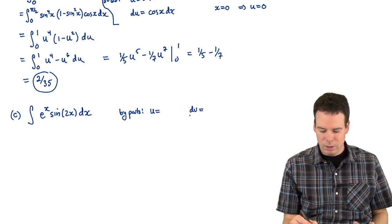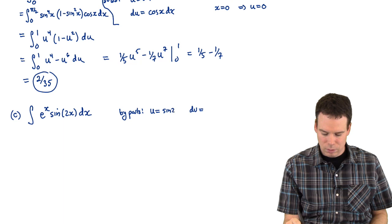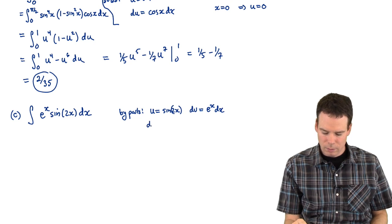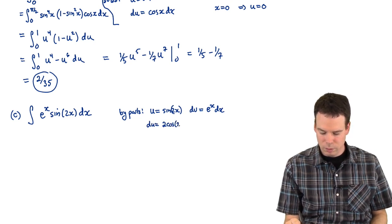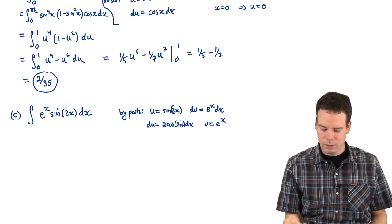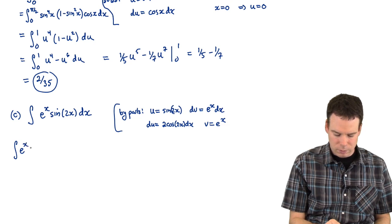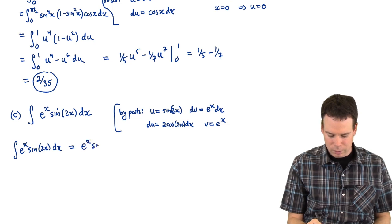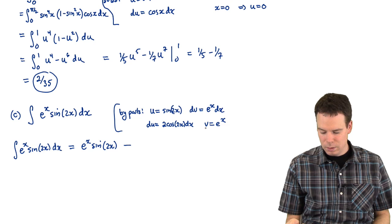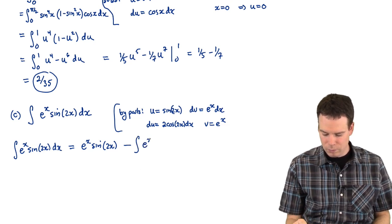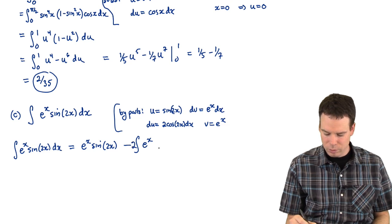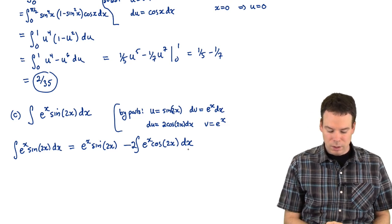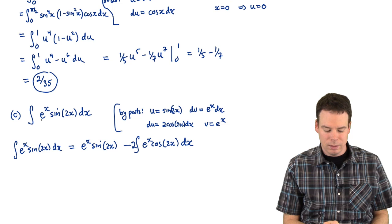I could take u to be sine 2 x and dv to be e to the x dx. So du is 2 cosine 2 x dx and v is e to the x. So our integral under one application of by-parts is equivalent to e to the x sine 2 x minus the antiderivative of the v du part. So that's e to the x. There's a 2 there so I can pull that up front. Cos 2 x dx. Now at this stage, just a quick check, did we make any progress?